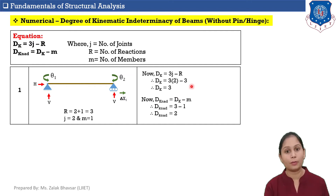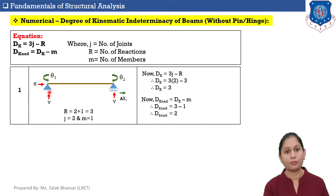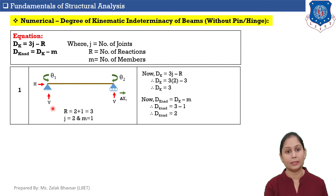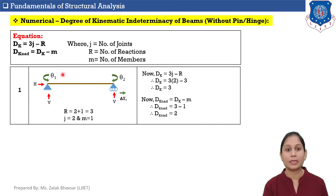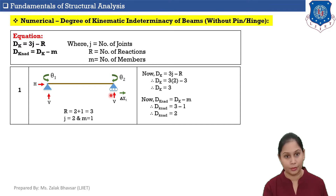Our answer can be verified from the figure. At the hinge support, only rotation is possible since horizontal and vertical displacements are restrained. At the roller support, vertical reaction is present, so only horizontal displacement and rotation are possible. Total displacements: rotation at hinge support, plus rotation and horizontal displacement at roller support, which equals 3. This matches our equation answer, so the answer is correct.